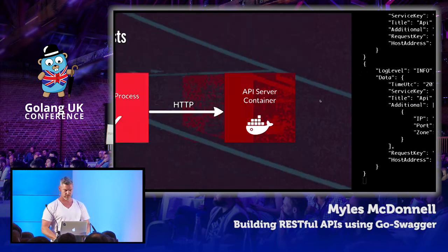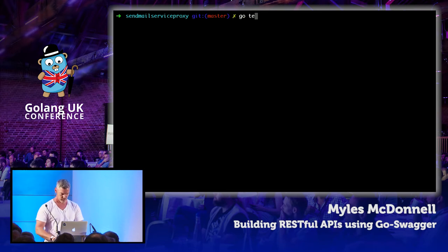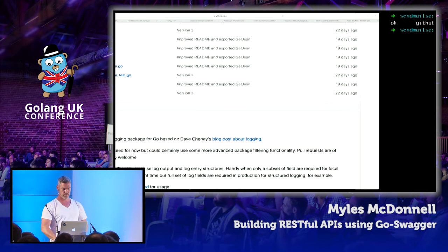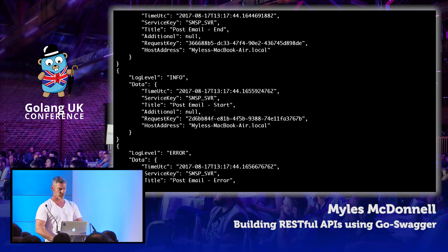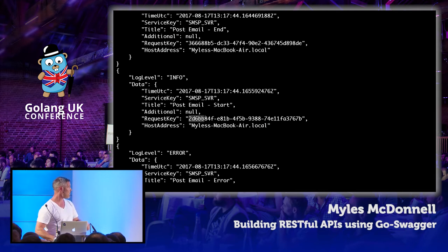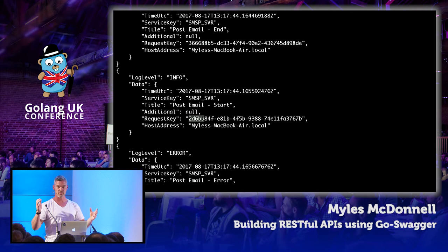The server's running on one terminal. Let's run the functional tests. Looks good. And we can see some log output — we've had an error in post-email, post-email end, post-email start. You can see there the request key and some other information, and obviously a timestamp. You can imagine over time, with a large body of this information, you can start to look at latency over time, latency on particular nodes (because we get the host address), and slice and dice this in lots of ways to help you come up with metrics when running a larger estate.